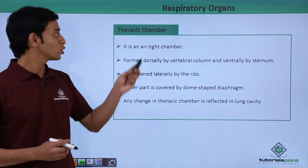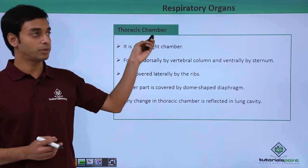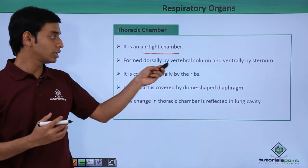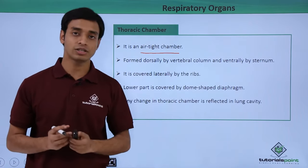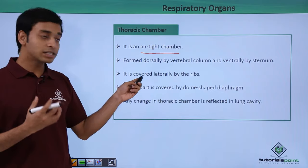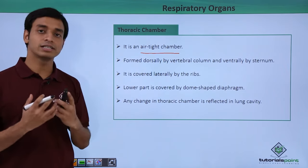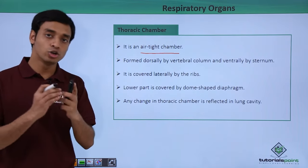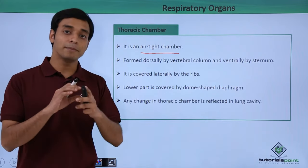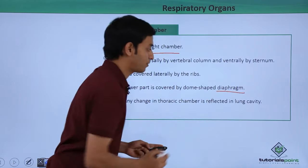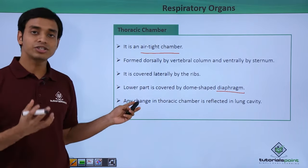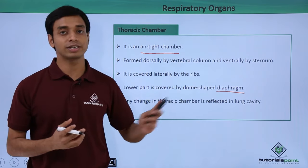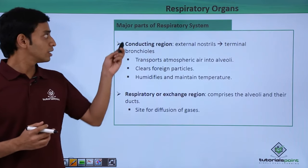Pleural fluid helps in reducing all friction that can occur inside the lungs. The thoracic chamber is an airtight chamber formed dorsally by the vertebral column and ventrally by the sternum. It is covered laterally by the ribs, and the lower part is covered by a dome-shaped muscular structure known as the diaphragm. Any change in the volume of the thoracic chamber is reflected in the lung capacity.